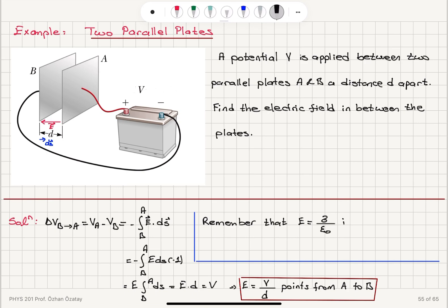permittivity of free space in between the plates. And we obtained this result using Gauss law. So remember that we have sigma over 2 epsilon zero due to one plate and the two plates, they add, we obtain sigma over epsilon zero,